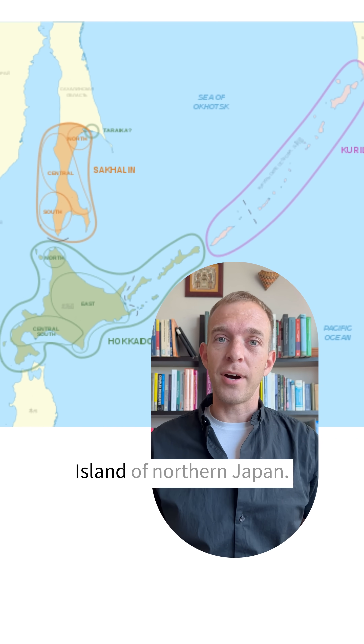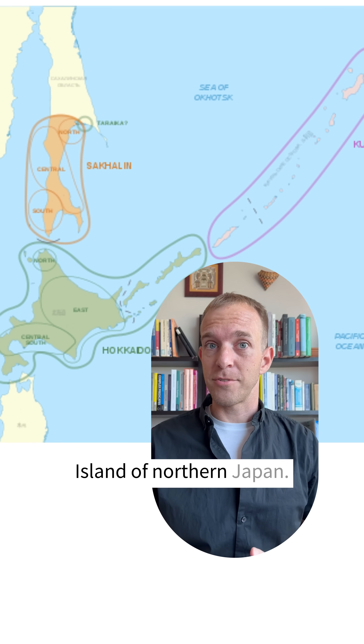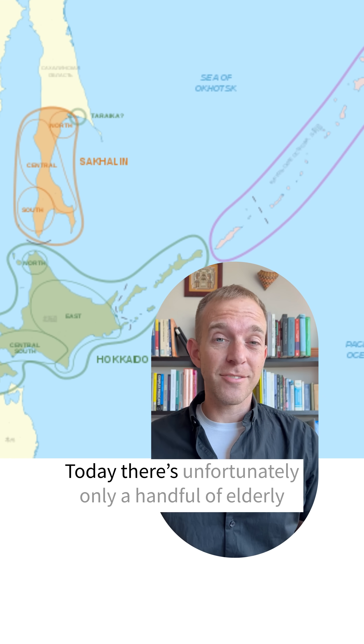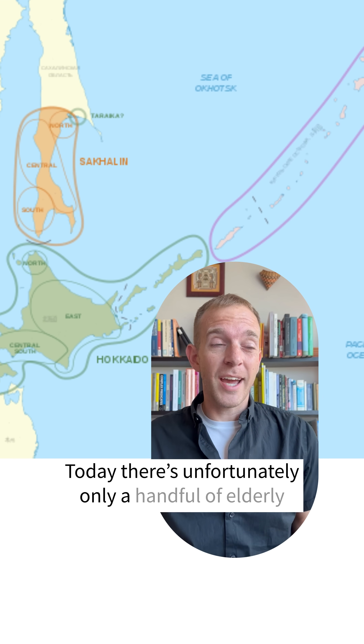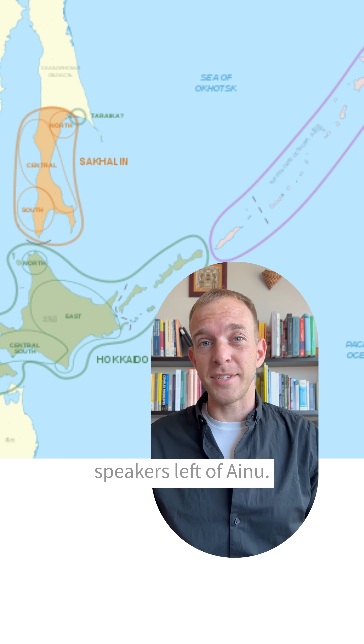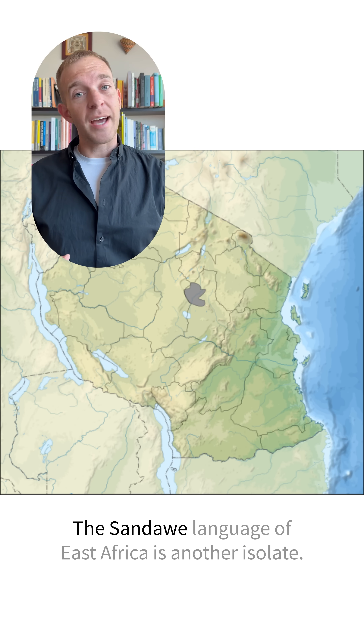Another famous language isolate is Ainu, spoken on the Hokkaido island of northern Japan. Today, unfortunately, there's only a handful of elderly speakers left of Ainu.